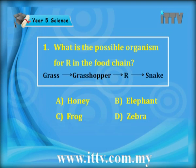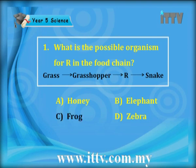The answer options are: A honey, B elephant, C frog, D zebra. Grasshoppers are actually herbivores, so R must be a carnivore or omnivore that consumes herbivores. The correct answer is C frog. The grass is eaten by the grasshopper, the grasshopper is eaten by the carnivore which is the frog, and lastly the frog is consumed by the snake.